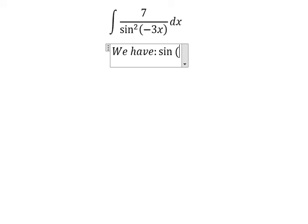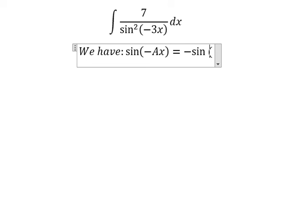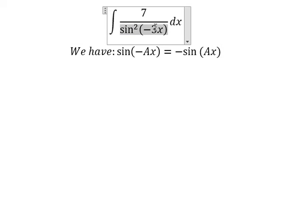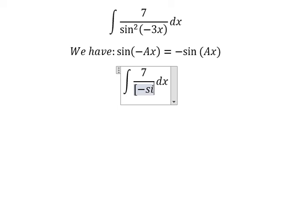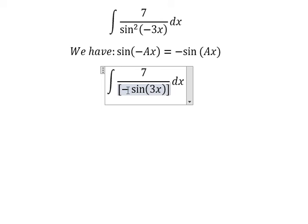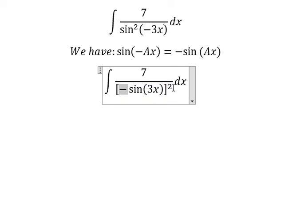sin(-Ax) equals negative sin(Ax), so we can apply this formula for this one. Because the power is about number two, number two is about even, so if we have the negative with the even power, you got about positive.